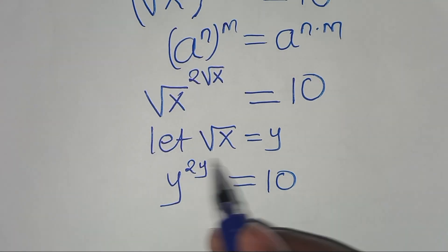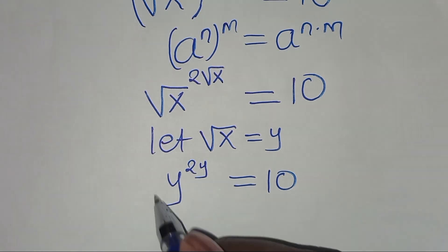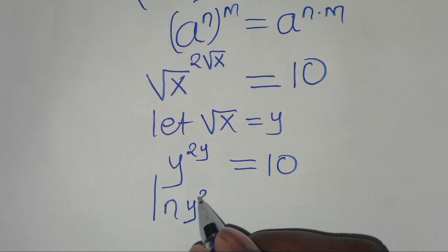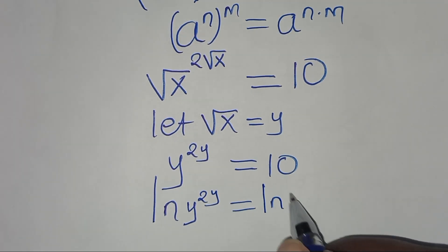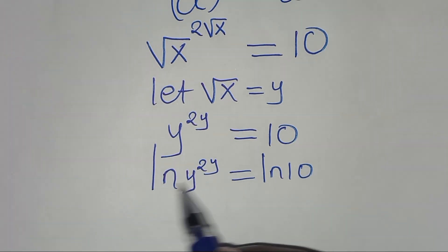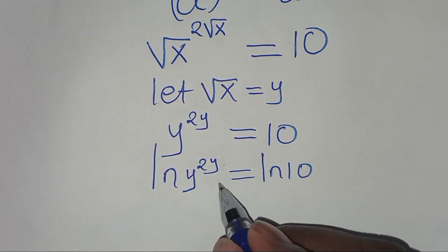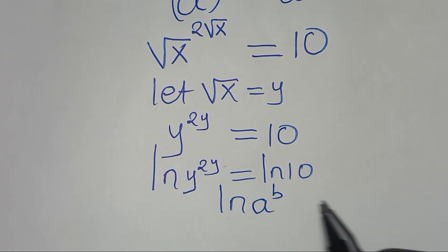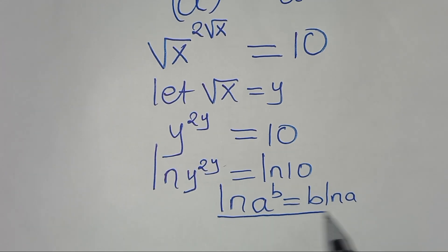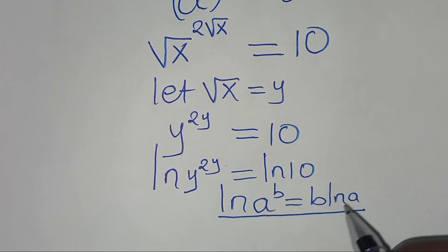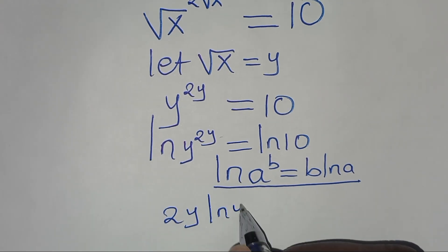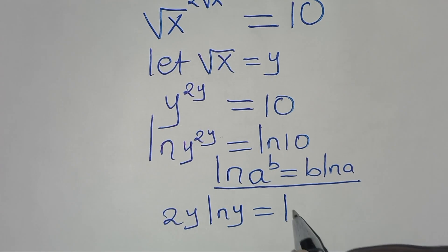Now, to solve for y, let's introduce the natural logarithm on both sides, so that we have ln(y^(2y)) equals ln(10). Since ln(a^b) = b·ln(a), applying this power rule property of logarithm, this implies that we have 2y·ln(y) equals ln(10).